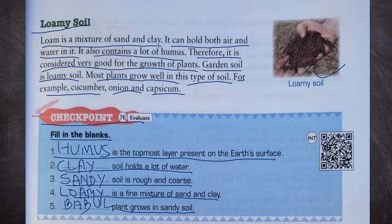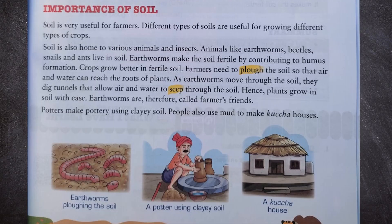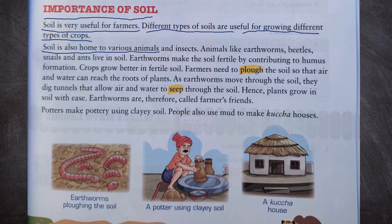Importance of soil: Soil is very useful for farmers. Different types of soils are useful for growing different types of crops. Soil is also home to various animals and insects — earthworms, beetles, snails, and ants live in soil. Earthworms make the soil fertile by contributing to humus formation. Crops grow better in fertile soil, and farmers need to plow the soil so that air and water can reach the roots of plants.